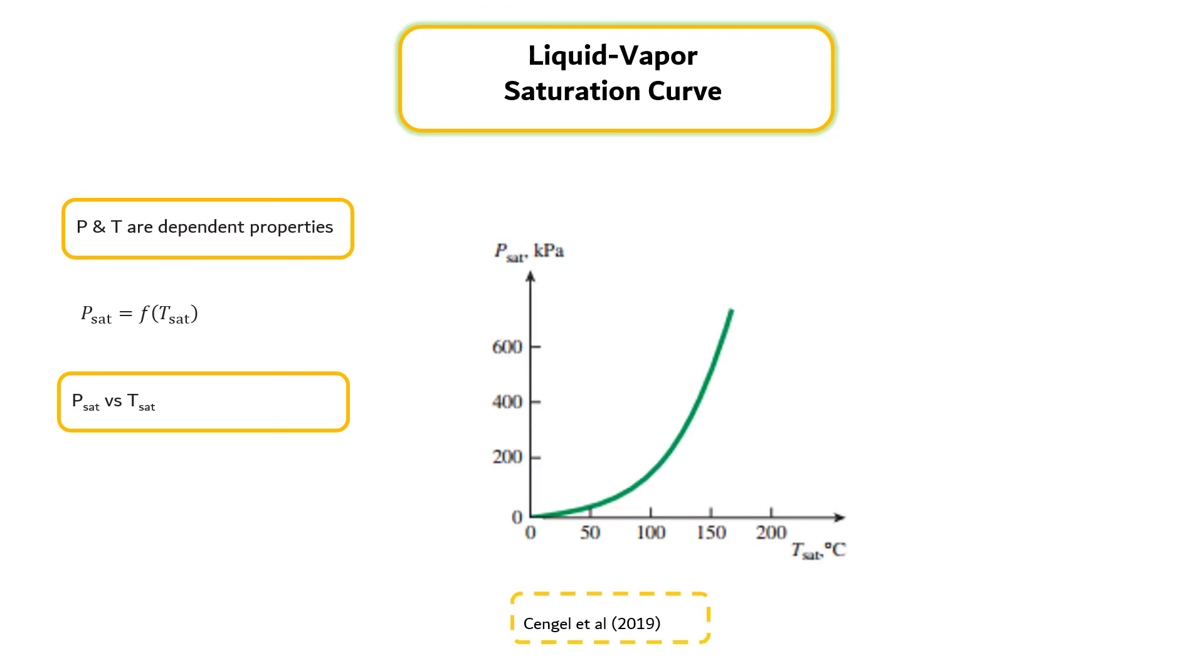During a phase change process, pressure and temperature are obviously dependent properties and there is a definite relation between them as shown in this slide. A plot of P saturation versus T saturation, such as the one given for water as shown in the right figure, is called the liquid-vapor saturation curve. The saturation temperature increases with the saturation pressure as can be seen from the figure.